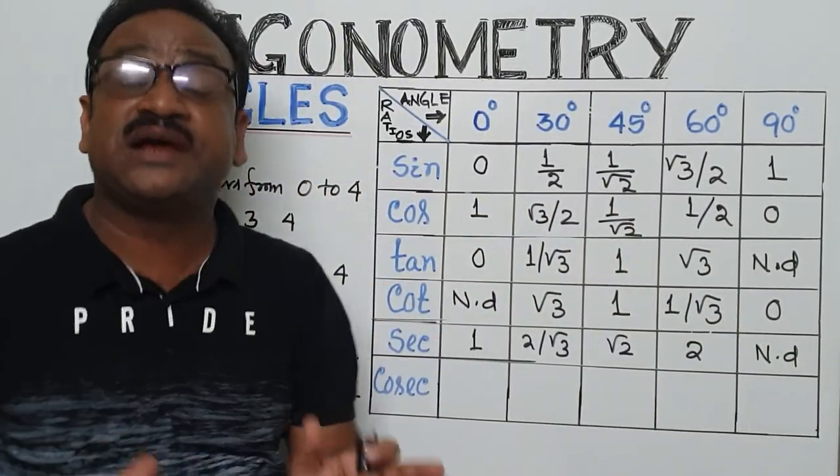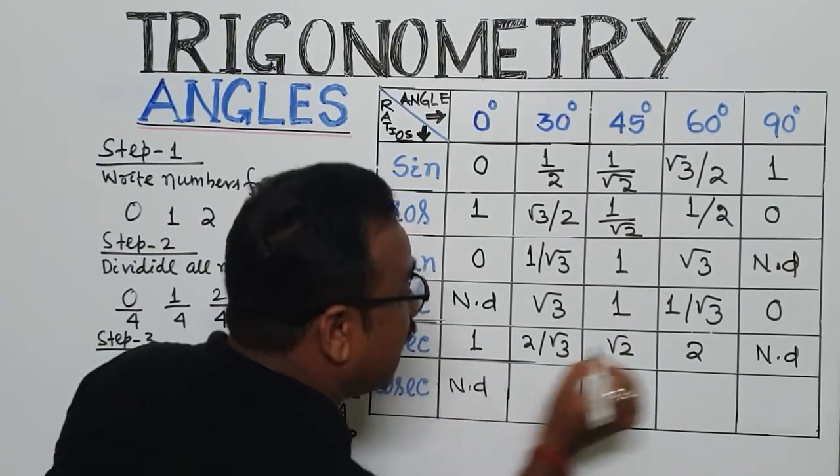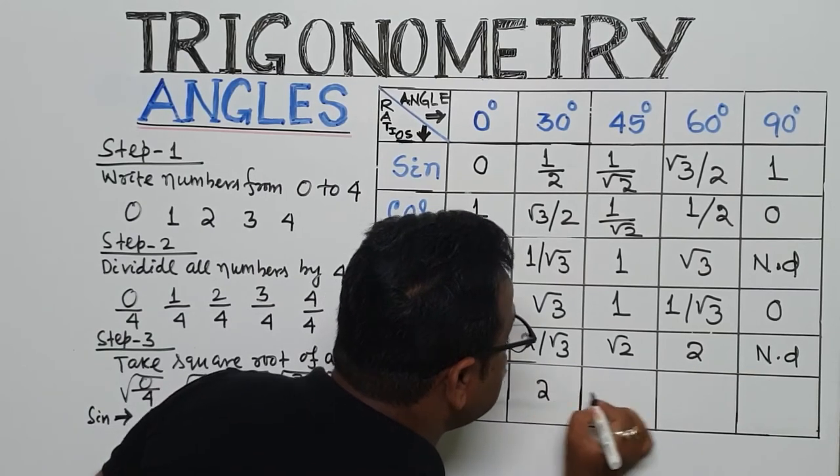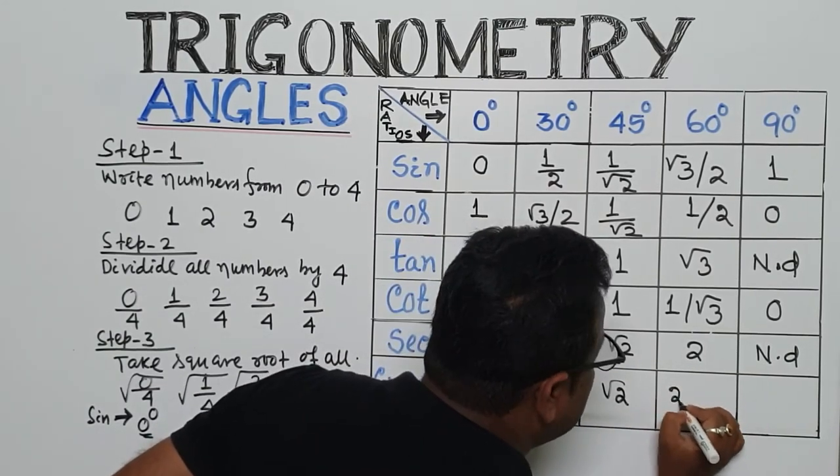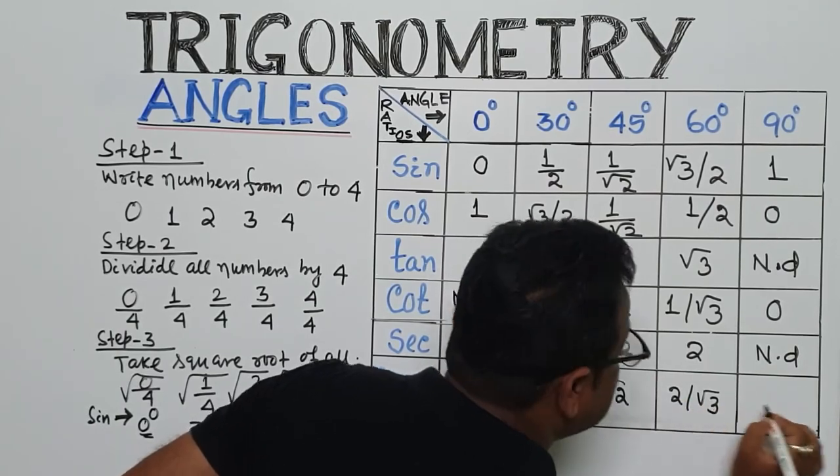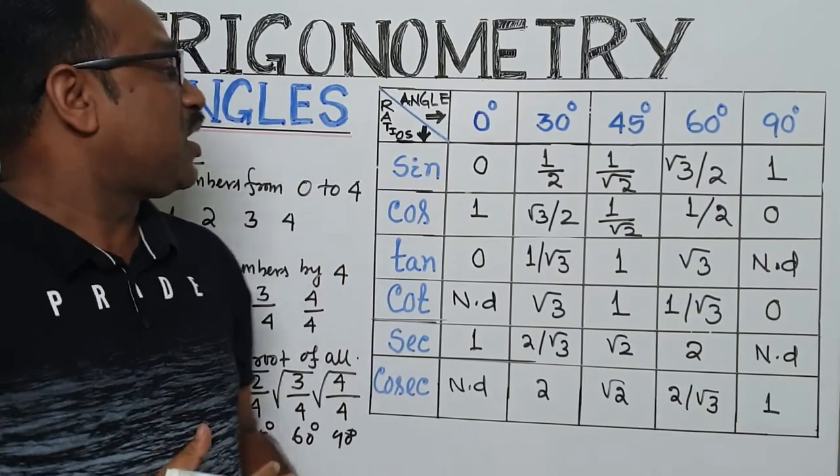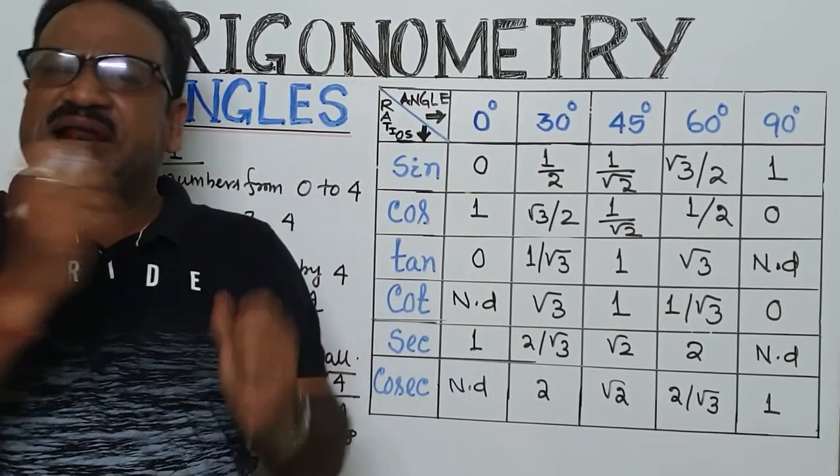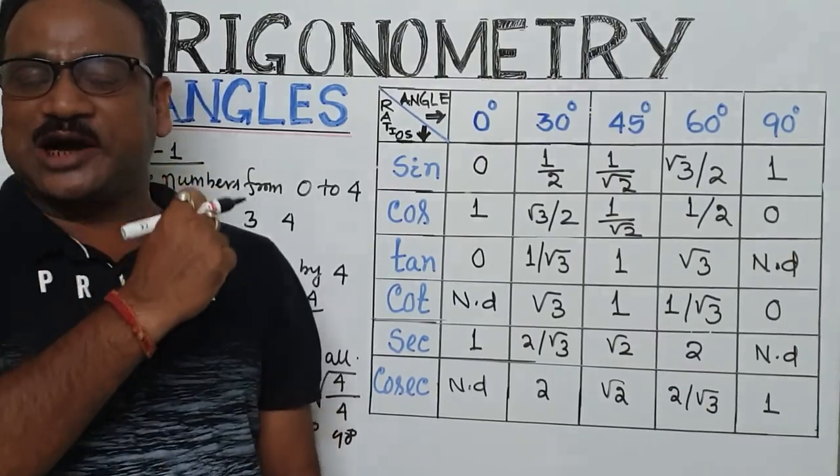As cos is the reverse of sin, so cosec will be the reverse of sec. So you are right - ND, and here 2, here root 2, here 2 by root 3, and here 1. This way, we can remember all the angles very smartly, very quickly. I hope that you have enjoyed it.